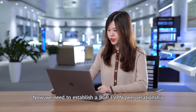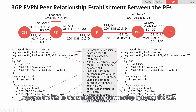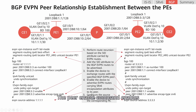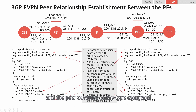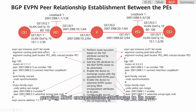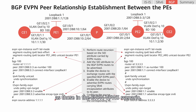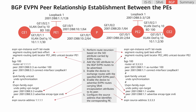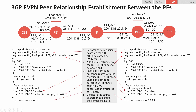Now we need to establish a BGP-EVPN peer relationship between the PEs to transmit routing information between the CEs. The peer-enabled command enables the device to exchange routes with the specified BGP-EVPN peer, and the peer-advertise-encap-type command enables the device to advertise EVPN routes carrying SRV6 encapsulation attributes to its peer. These two commands are configured in the same way as those in the EVPN-VPWS scenario, and EVPN-VPLS and VPWS share the same EVPN peer relationship. We also need to configure route recursion, and the two commands involved are also similar to those in the EVPN-VPWS scenario.